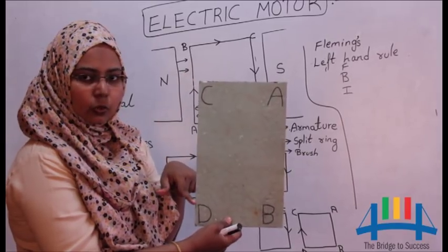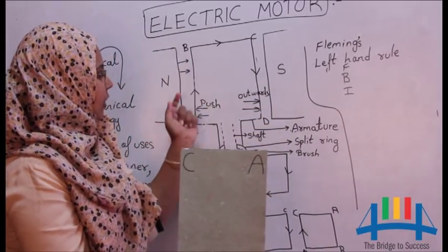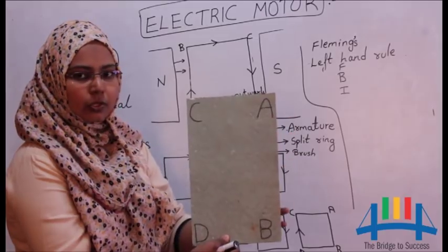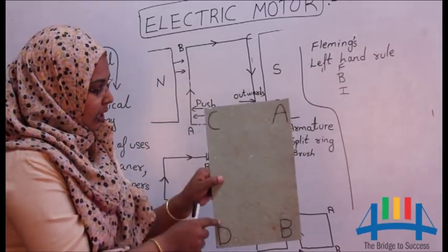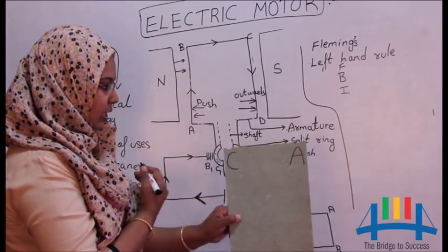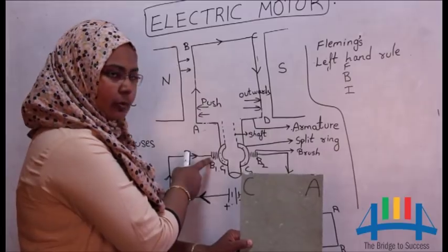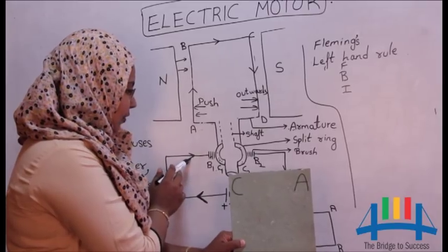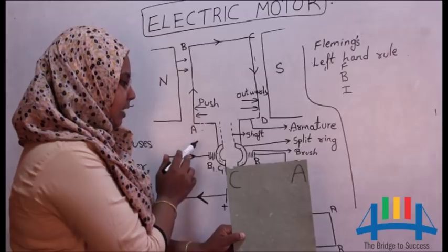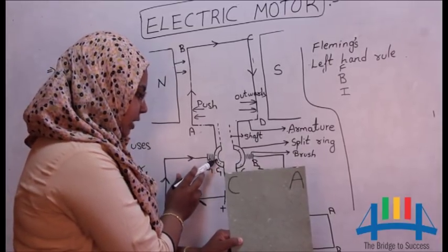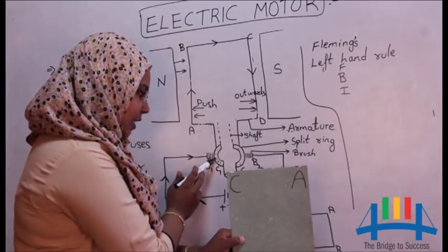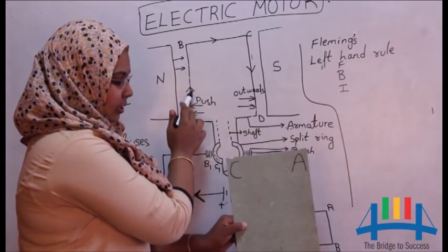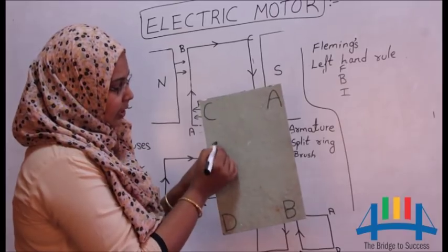Now, you can see that CD is facing towards me. In the previous case, AB was facing me and CD was to the other side. Now, CD is facing me and AB is to the other side. The ring attached to CD is C2. When CD is towards me, C2 attaches to the brush B1. The direction of current in B1 is in upward direction. So the same current will enter the ring C2 and it will continue in the upward direction. So this time, the current in CD is in upward direction.